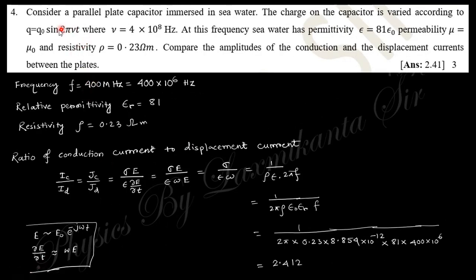Next: Consider a parallel plate capacitor immersed in water. The charge of the capacitor varies according to this one and this frequency is like that. The permittivity is related to this one. Compute the conduction current to displacement current ratio. Conduction current equals sigma E, displacement current equals this one. If you just put this value it will be this one.